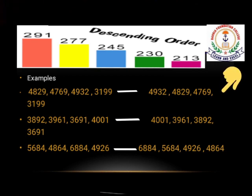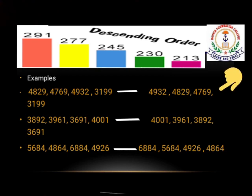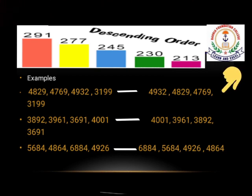Next example is 5684, 4864, 4884 and 4926. First comes 5684, then 4926, then 4884, and the smallest number is 4864.